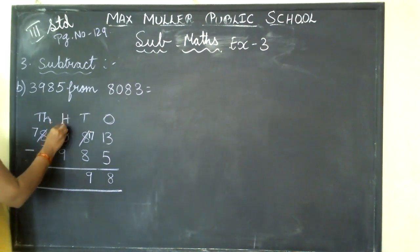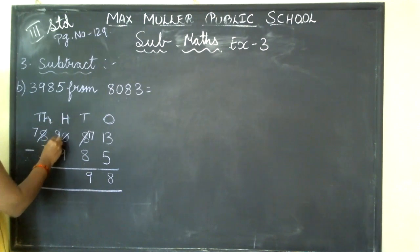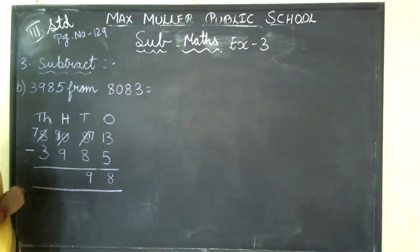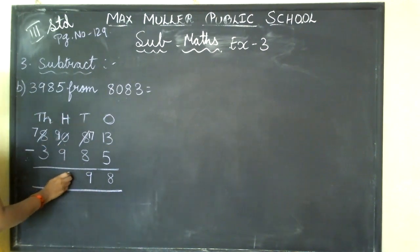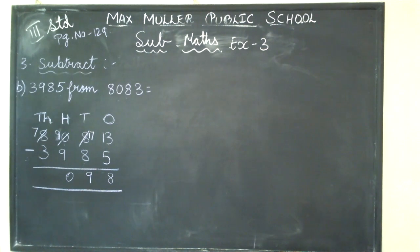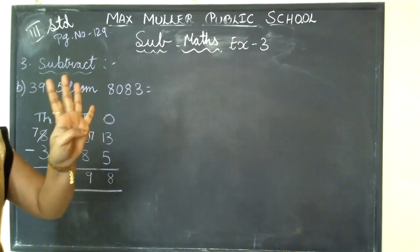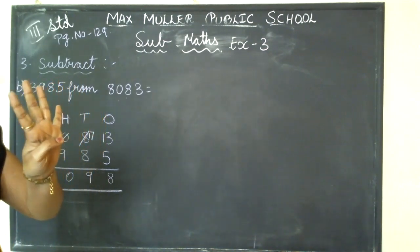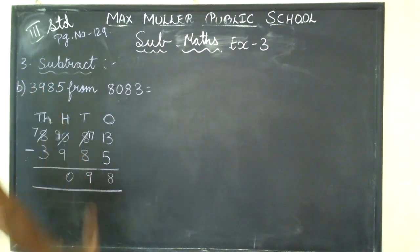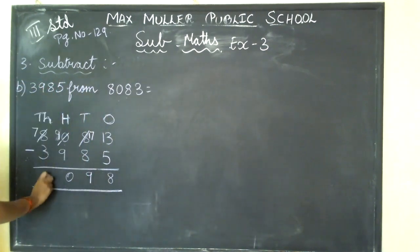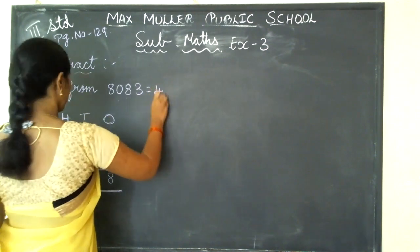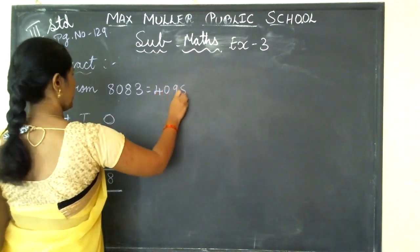Next, in the hundreds place: 9 minus 9 — from 9 if you minus 9, how much will you get? 0 — write 0. In the thousands place: 7 minus 3 — from 7 if I minus 3: 1, 2, 3 — how much is remaining? 1, 2, 3, 4. Write 4. Answer: 4,098.